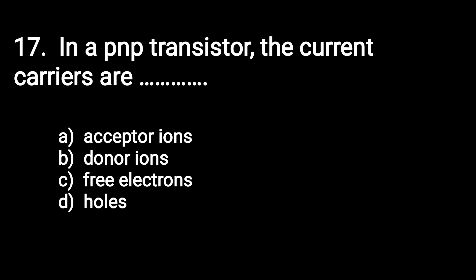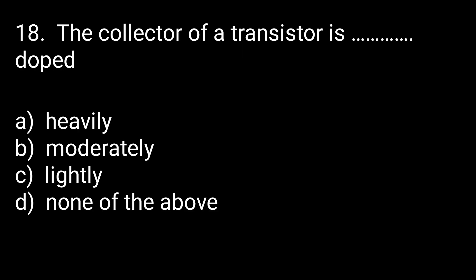Next question: in a PNP transistor, the current carriers are acceptor ions, donor ions, free electrons, or holes? Option B is correct — in a PNP transistor the current carriers are holes. Regarding doping levels: the collector is moderately doped, the emitter is heavily doped, and the base is lightly doped.